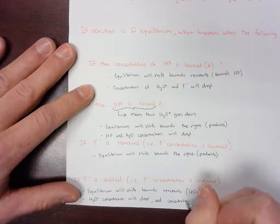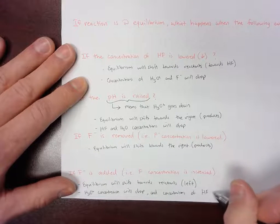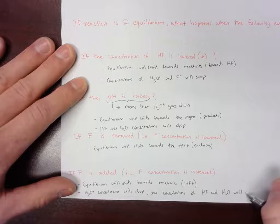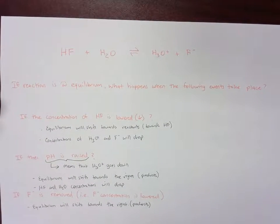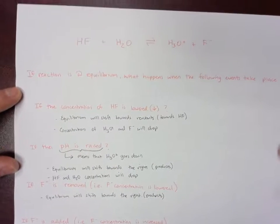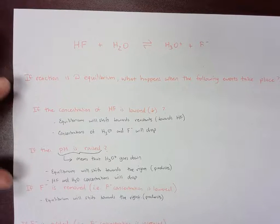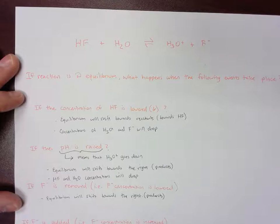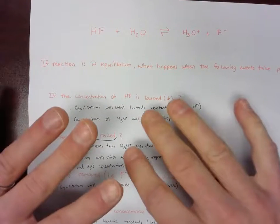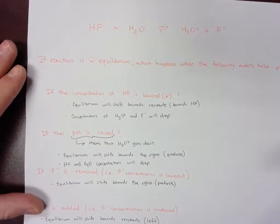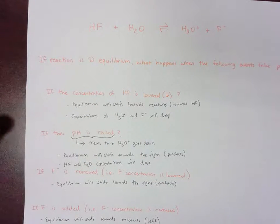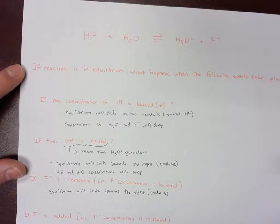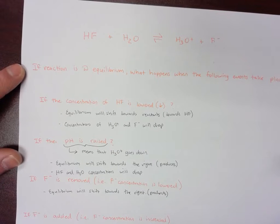So H3O+ concentration will drop, and concentrations of HF and H2O will increase. The underlying fundamentals of equilibrium are expressed here: it can apply to any situation. You just have to understand whether you're adding reactant, taking away reactant, adding product, or taking away product. It's also important to understand how H3O+ fits into the equation in terms of pH — and how that connects to systems like the blood buffer system with CO2.